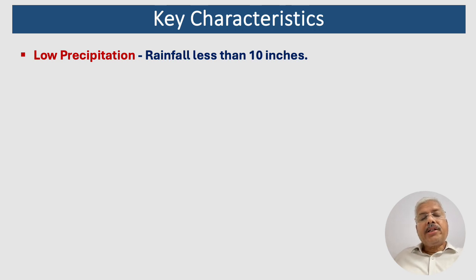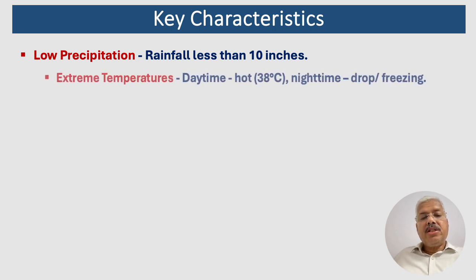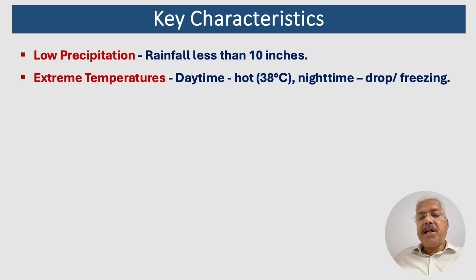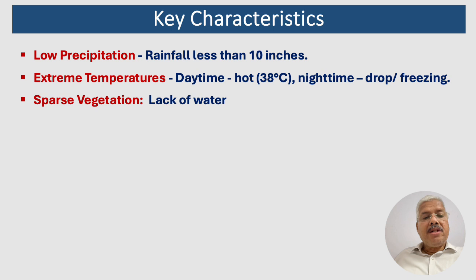The key characteristics of the desert biome: deserts receive less than 10 inches of rainfall per year. Deserts experience some of the most extreme temperature fluctuations on Earth. Daytime temperatures can be scorching, often reaching well over 38 degrees Celsius, while nighttime temperatures can drop significantly, sometimes even below freezing.